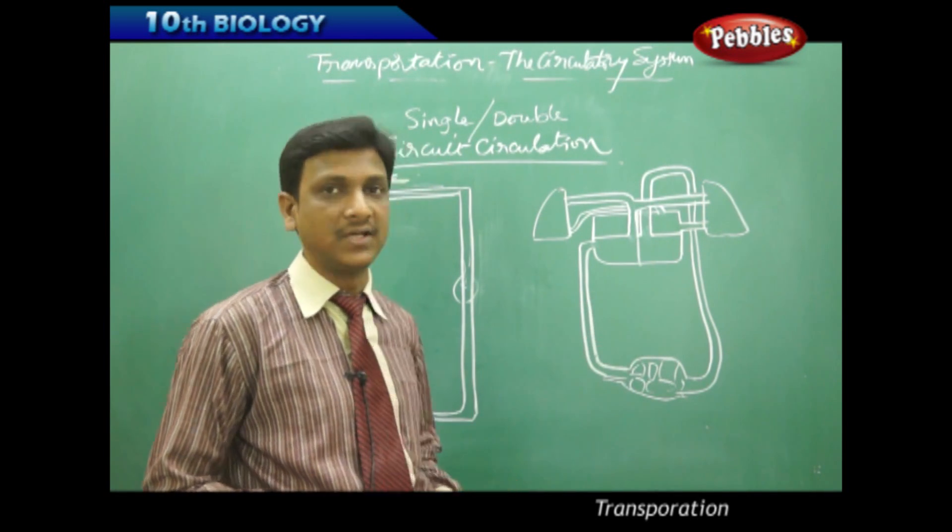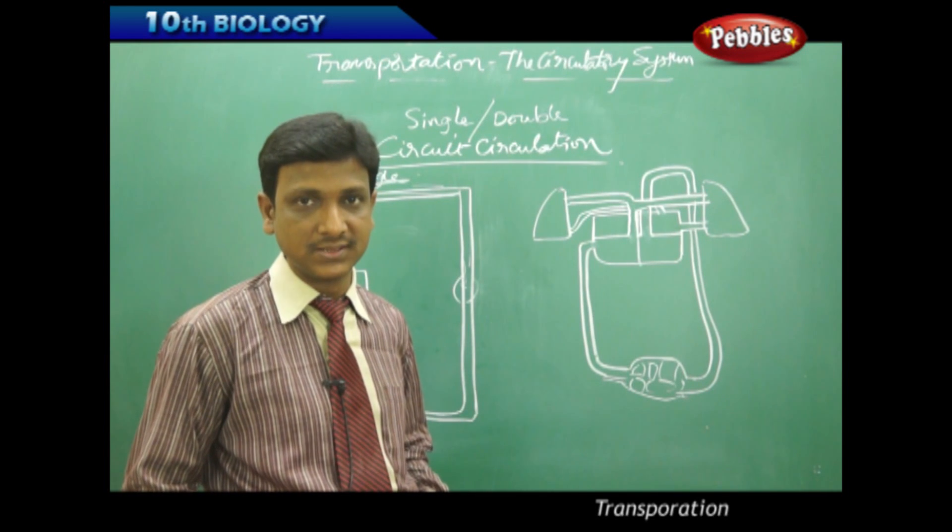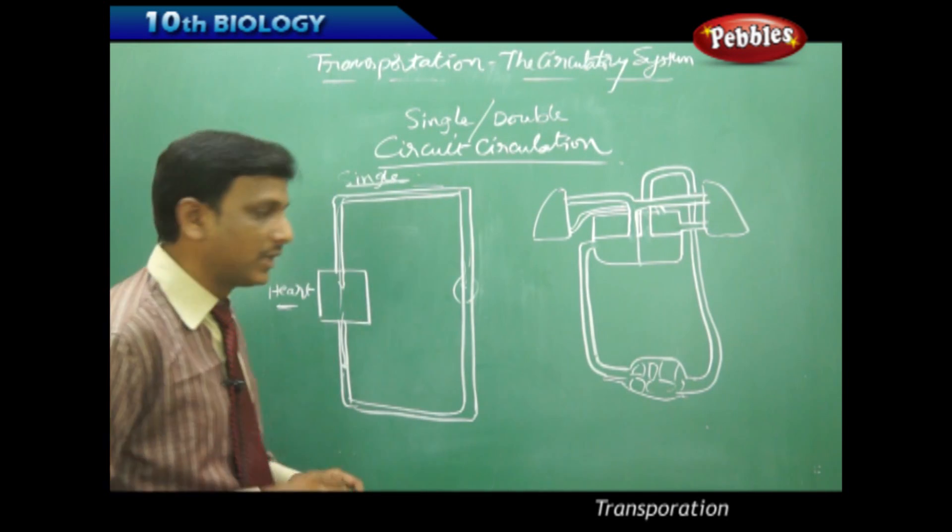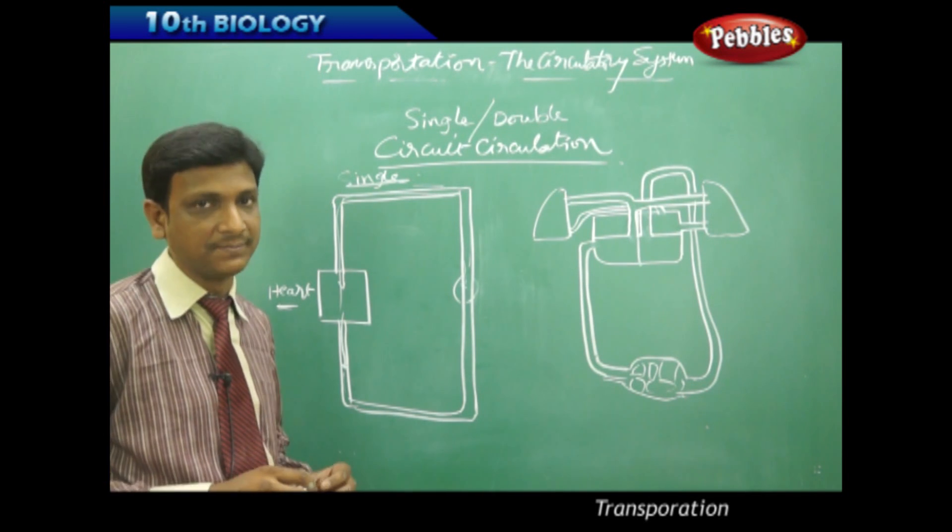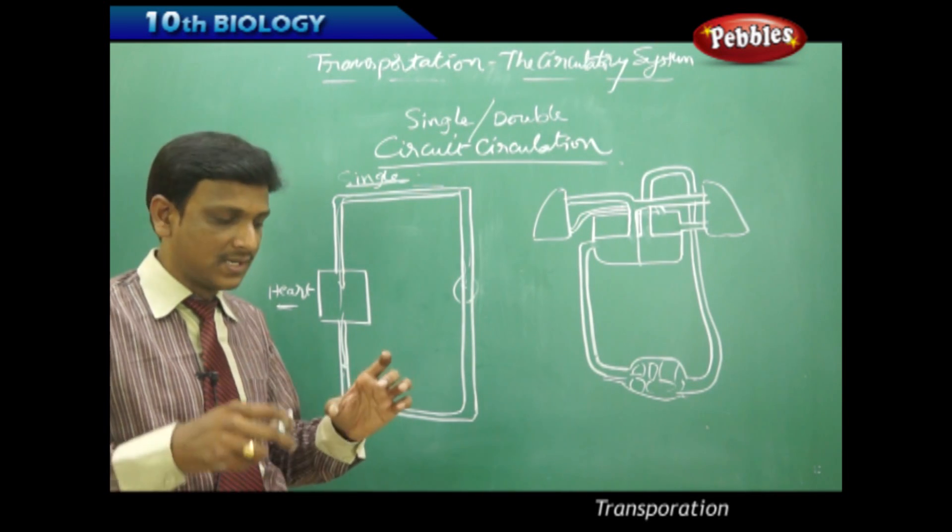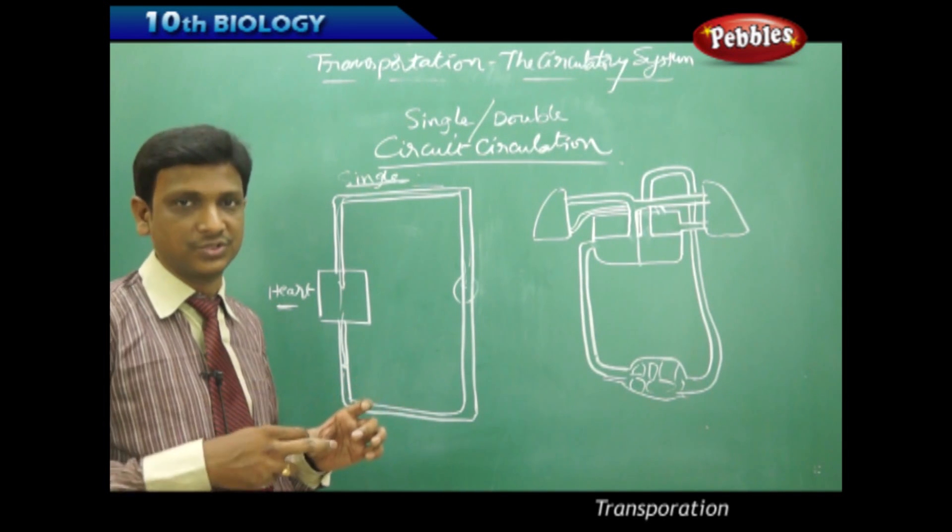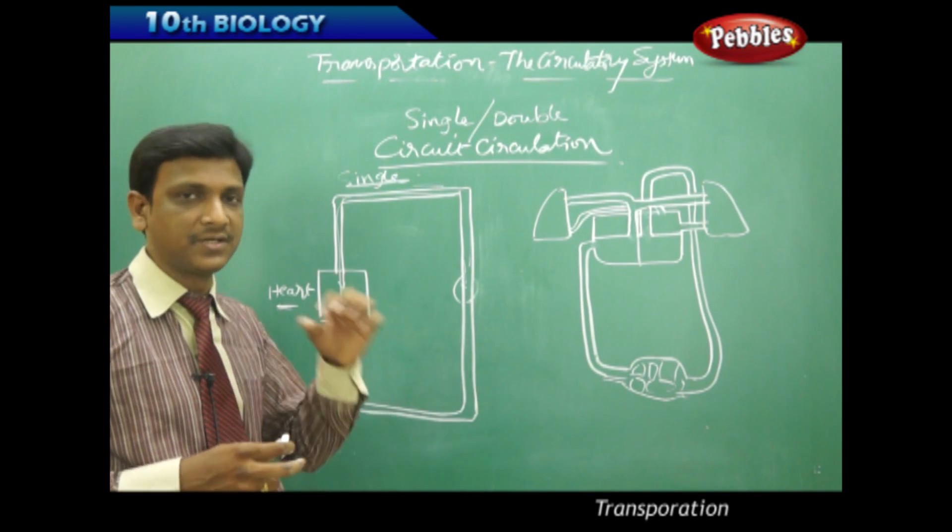In human beings, we observe the double circuit circulation in all mammals. That means in completing one cycle, the blood flows through the heart twice, two times. The blood circulation has got two circuits. That is double circuit circulation.